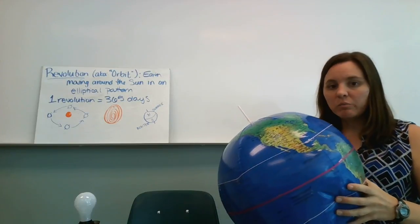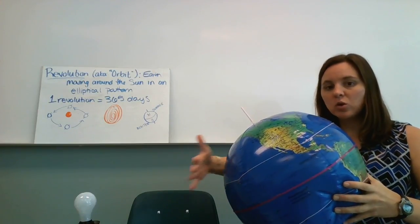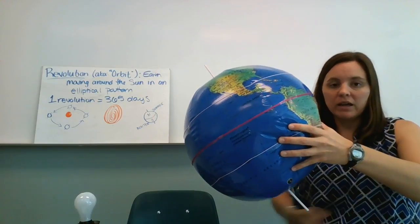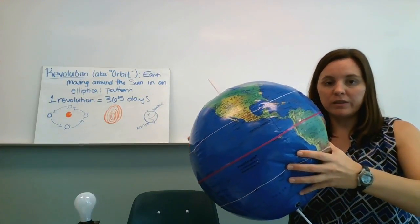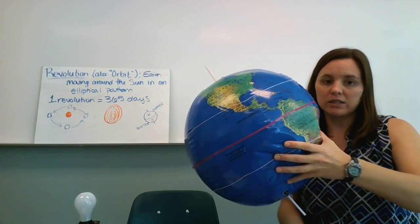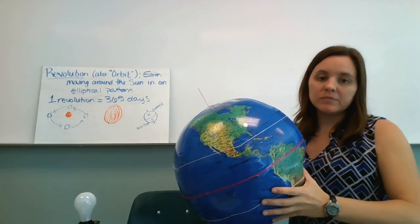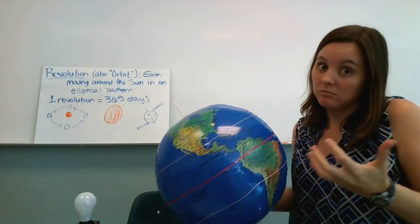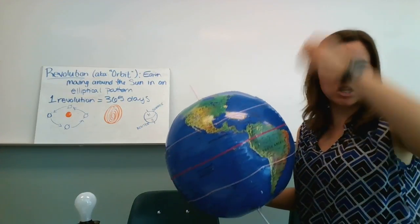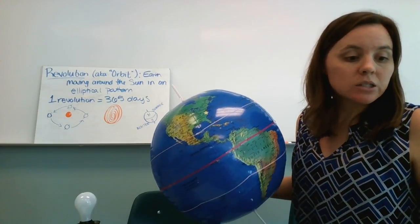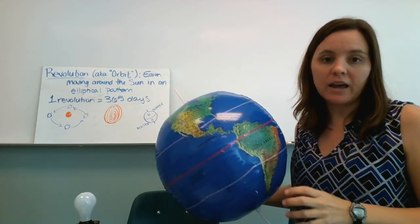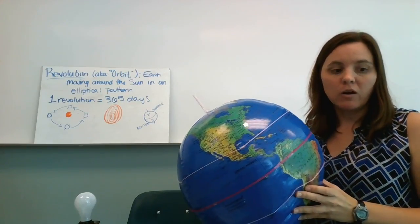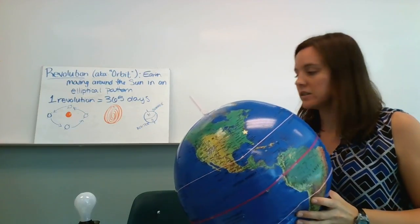And so that causes one part of the earth to be tilted towards the sun and the other part of the earth to be kind of tilted away. So the northern hemisphere is north of the equator and the southern hemisphere to the south of the equator. And we just orient it like this because we live in the northern hemisphere and we like to be on top of things. Anyway.